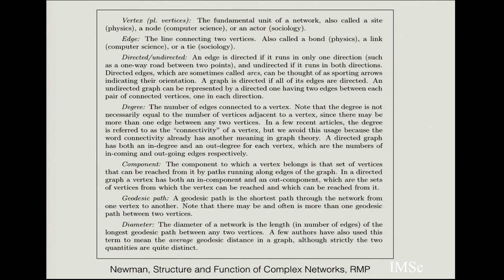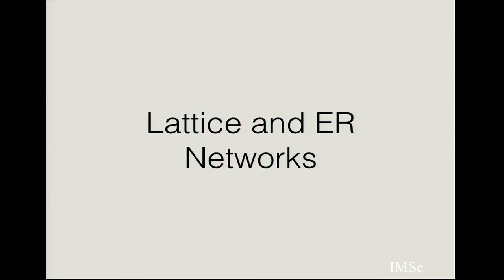Much of these definitions are summarized in Newman's article in Reviews of Modern Physics. The standard terms covered include vertex, edge, directed, undirected, degree, component, path, and diameter. These are standard definitions in network science, and any reasonable review will contain all of this information. The language may differ slightly depending on whether you are in the social, economic, or disease literature, but they all mean the same thing.